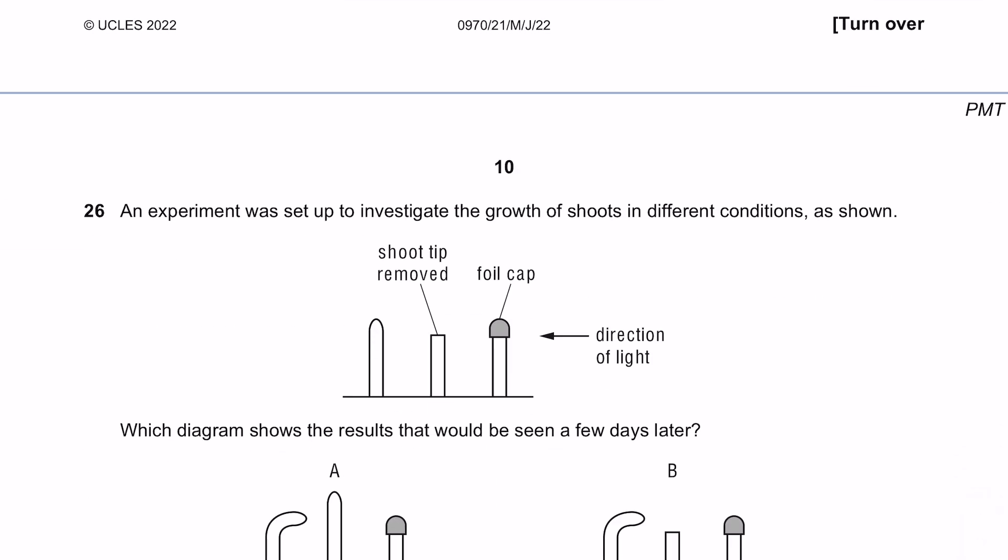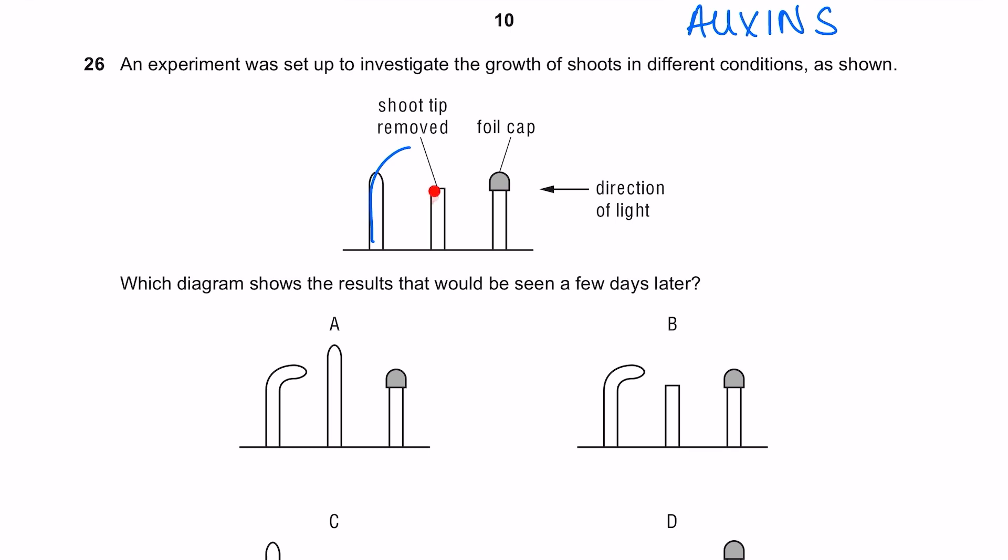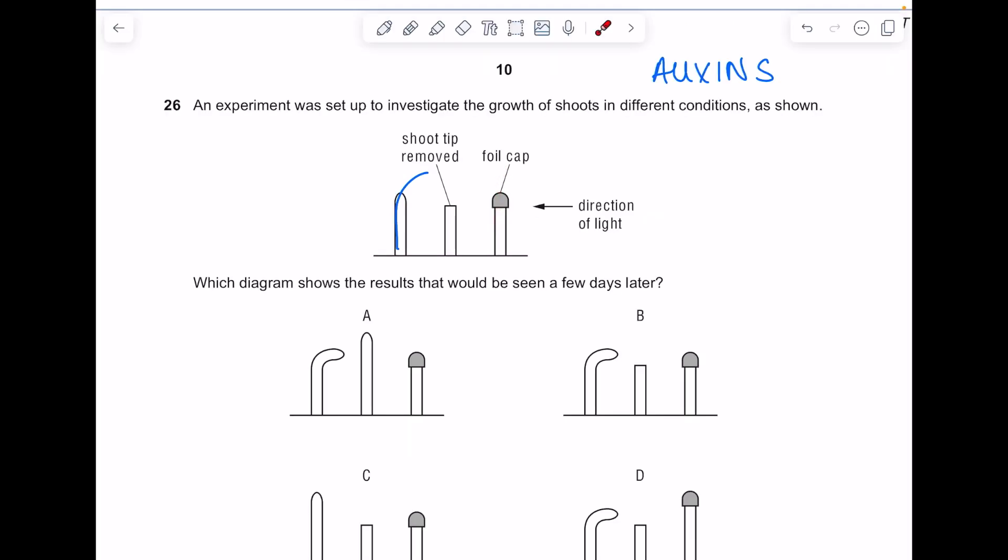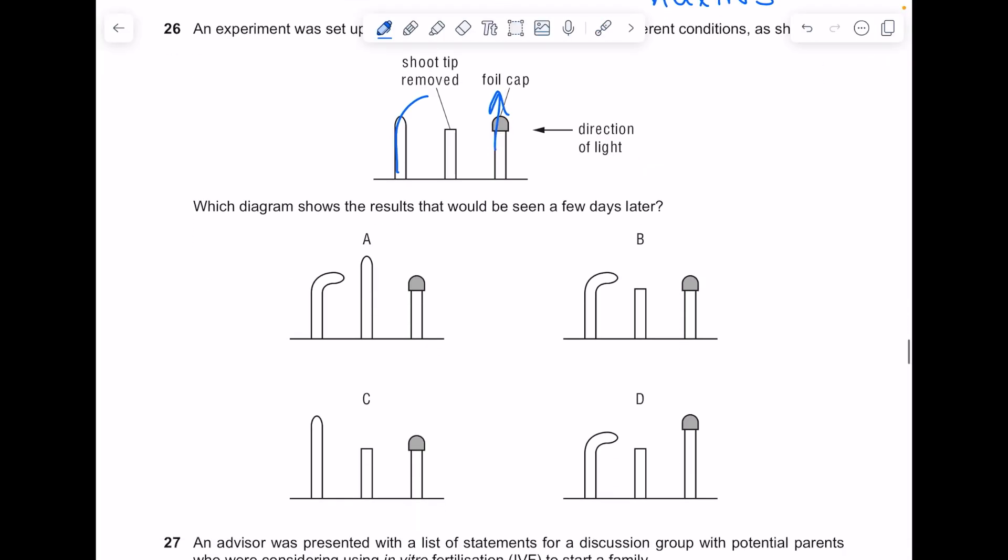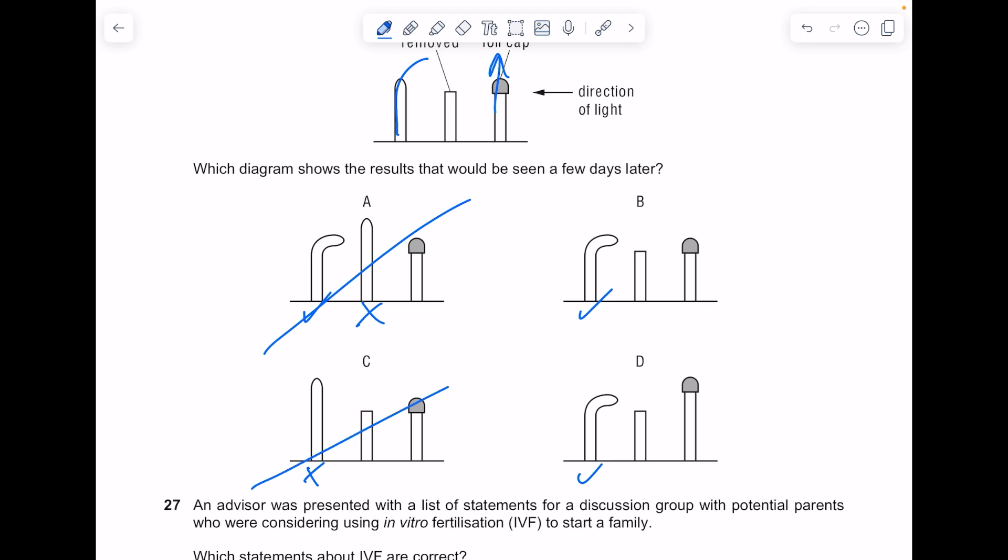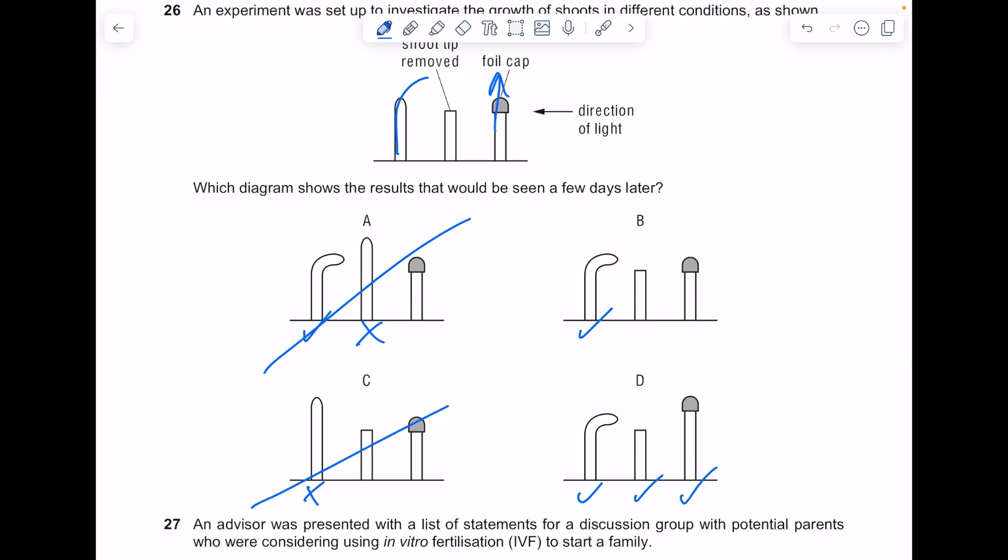An experiment was set up to investigate the growth of shoots in different conditions. This is all to do with auxins and tropisms. Which diagram shows the results that would be seen a few days later? If the direction of the light is coming from the right, you'd expect this shoot to bend to the right. Because the tip has been removed here you won't expect to see very much growth at all. The foil cap means that the auxins aren't exposed to that light so you'll get growth continuing in the normal direction. I would expect D because I would expect that growth on that final shoot.